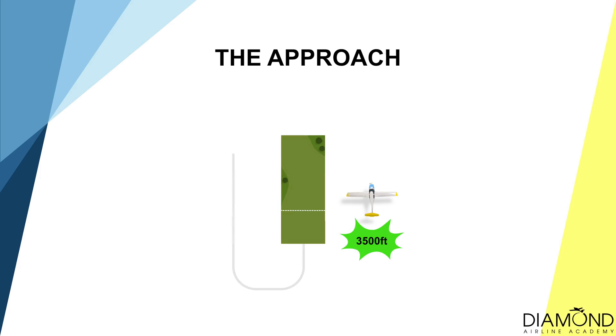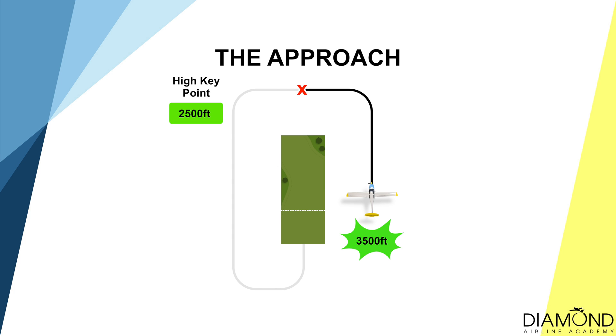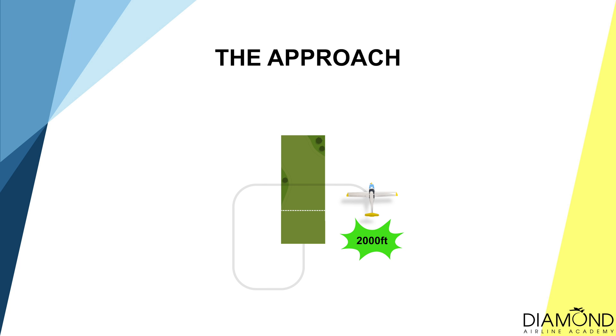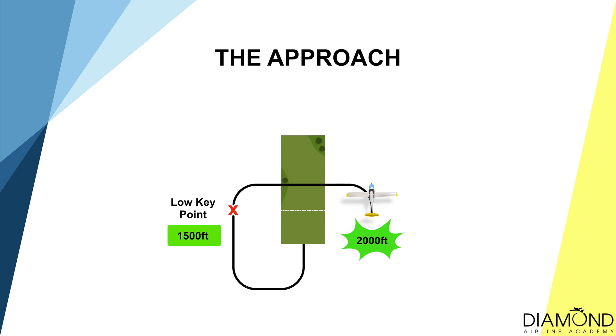If the aircraft is currently at 3,500 feet, it should be able to glide to the high key at 2,500 feet, then to low key at 1,500 feet, and then land. However, if the aircraft is only at 2,000 feet, high key would no longer be an option and we have to go to low key at 1,500 feet straight away and then land. When the aircraft arrives at a key point below the target altitude, there is a higher chance of undershooting, so we have to reduce the gliding distance.